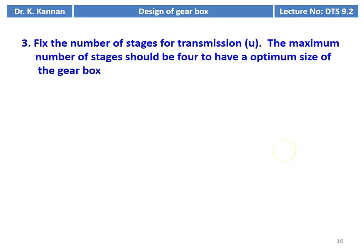We then fix the number of stages for transmission. The maximum number of stages should be 4 to have an optimum size of the gearbox. When the number of stages increases, the overall size of the gearbox increases. So the maximum number of stages is 4 — single stage, double stage, 3-stage, or 4-stage.